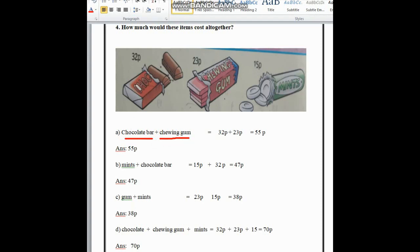First one is chocolate bar and chewing gum. Chocolate is 32p, so we write 32p, plus chewing gum is 23p. We write 23p. If we add 32 with 23 we get 55p.